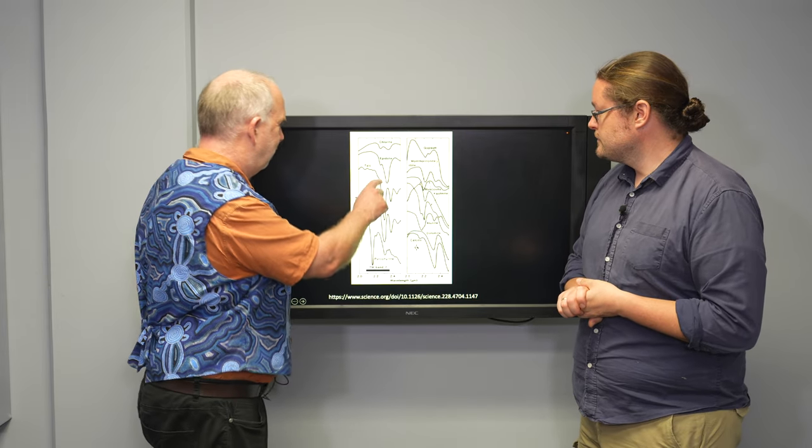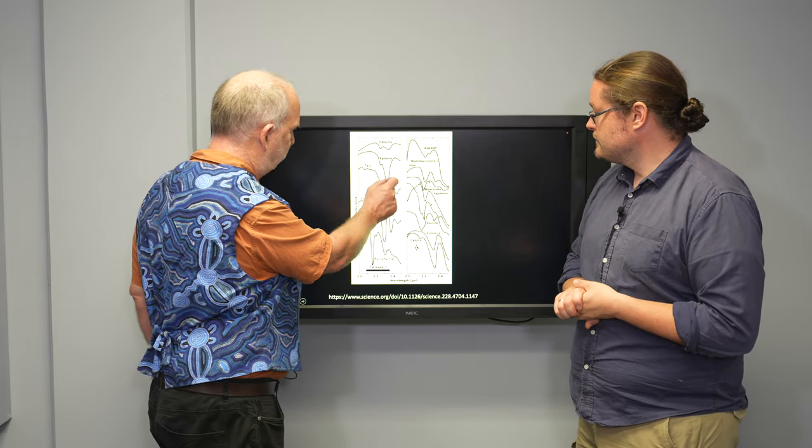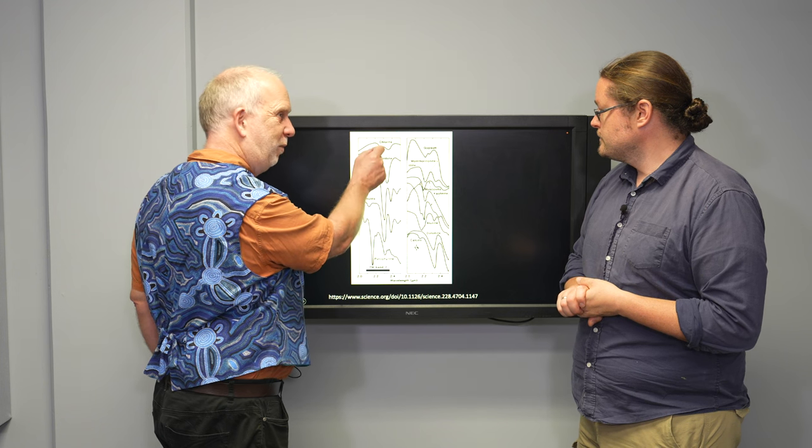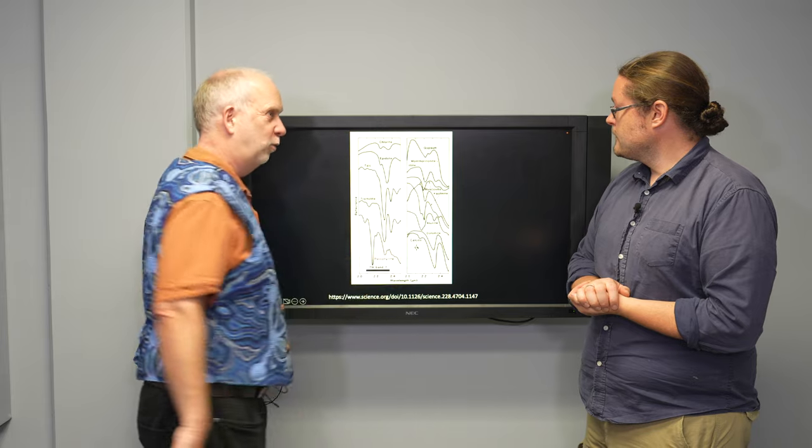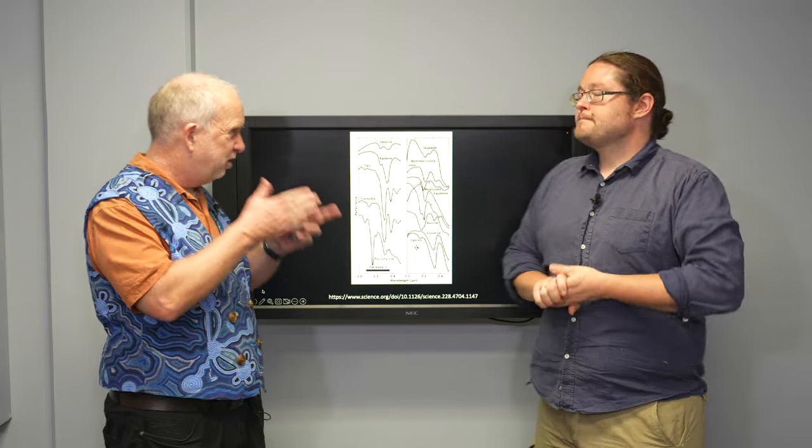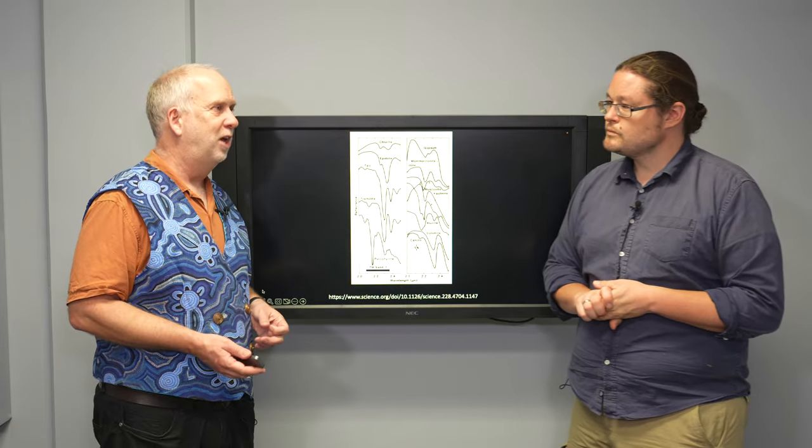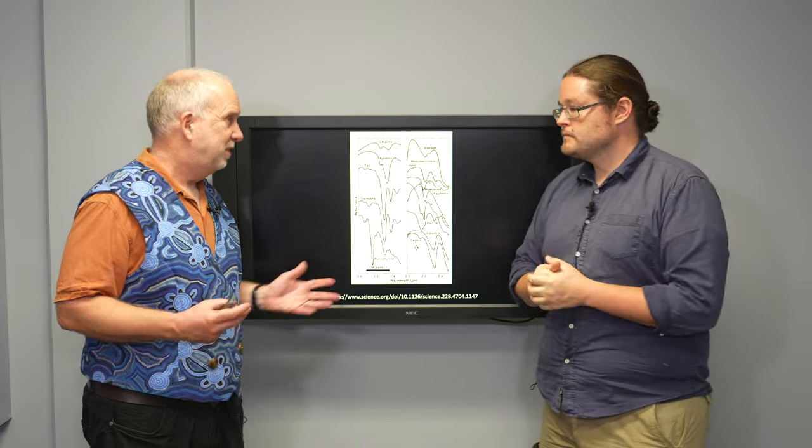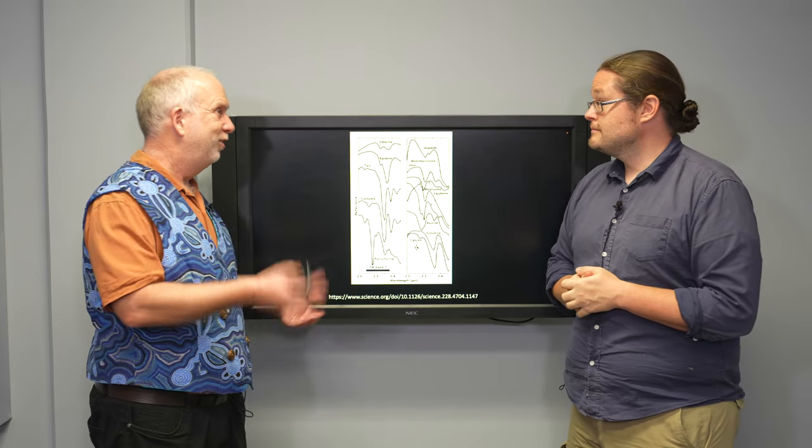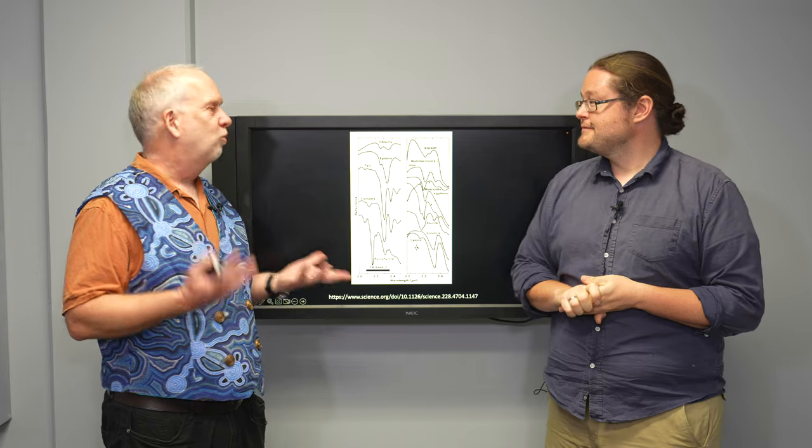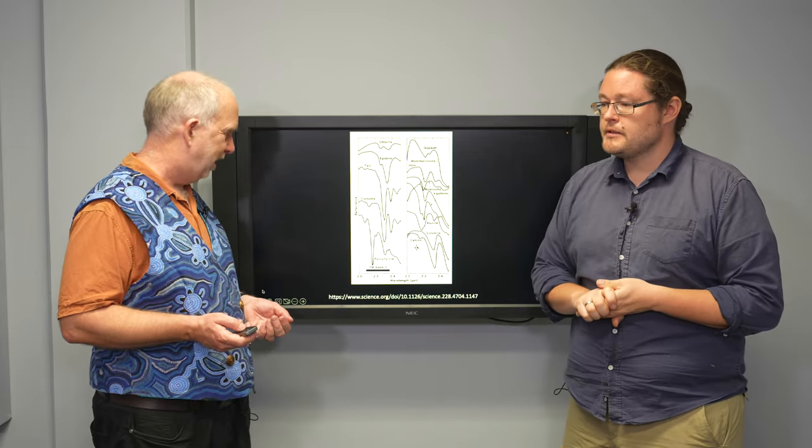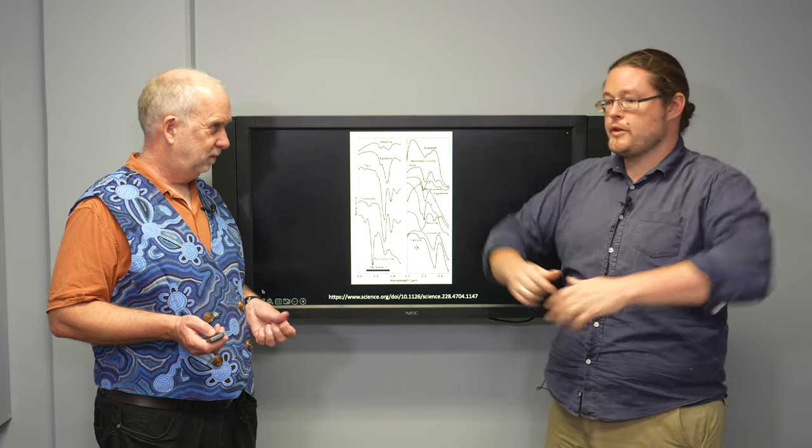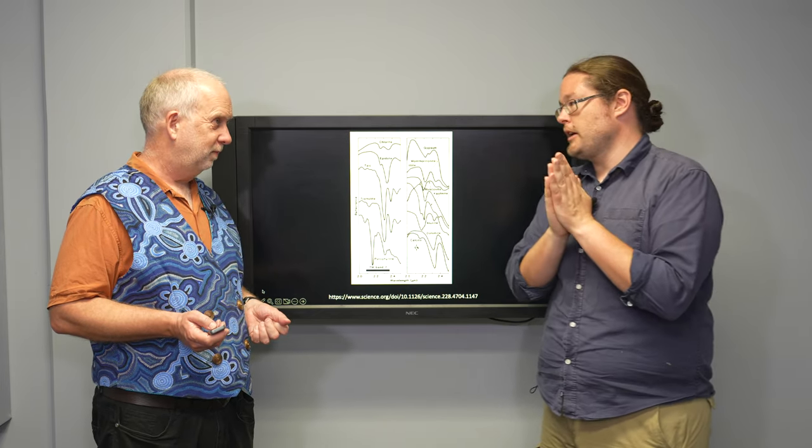Whereas something that's different like gypsum would have a quite different thing. So if you look by enough different wavelengths, you cannot just tell there's a building or an enemy tank there, but say it's made of this. Yes. Or you can distinguish different types of plants and whether they're healthy or unhealthy. This is for crop yields. That's right.